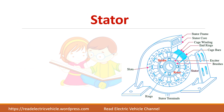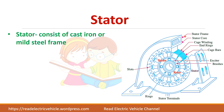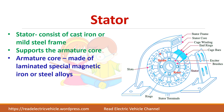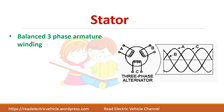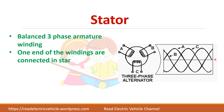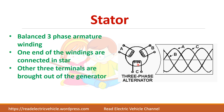First let us see about the stator. This is the constructional view of the three-phase alternator. The stator frame is the outermost part, which protects the stator core or armature core, and there are slots to keep the stator windings. This armature core consists of a three-phase armature winding — three armature windings displaced by 120 degrees. One end of the windings are connected in star and the other ends are brought out for taking the output.